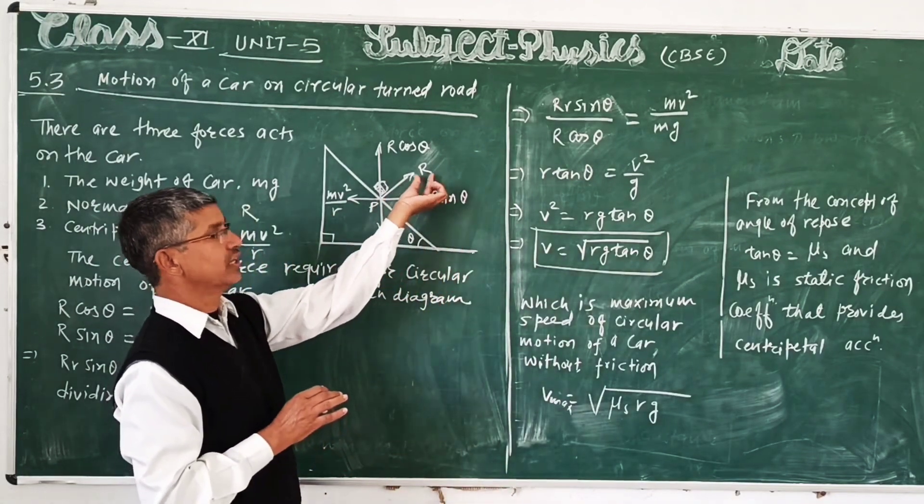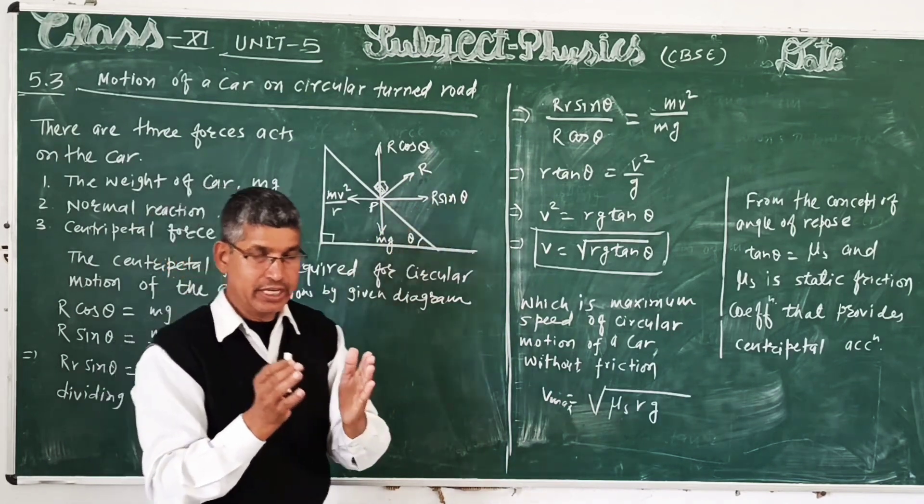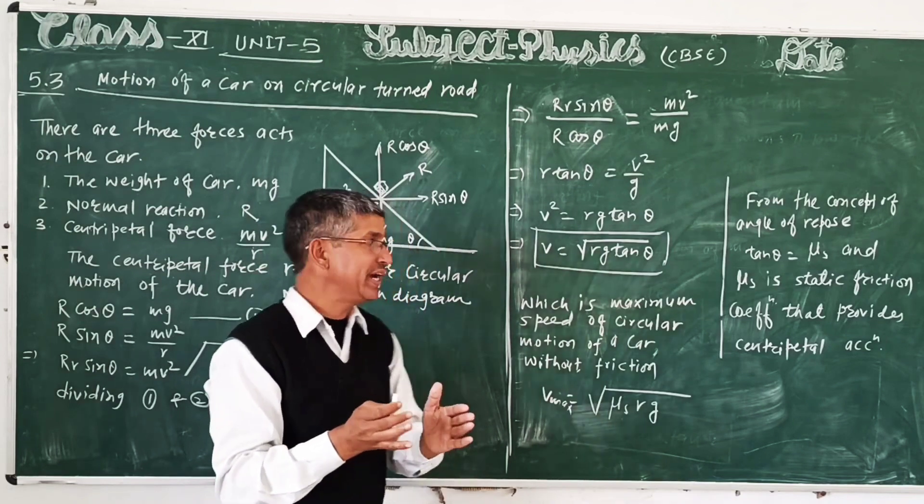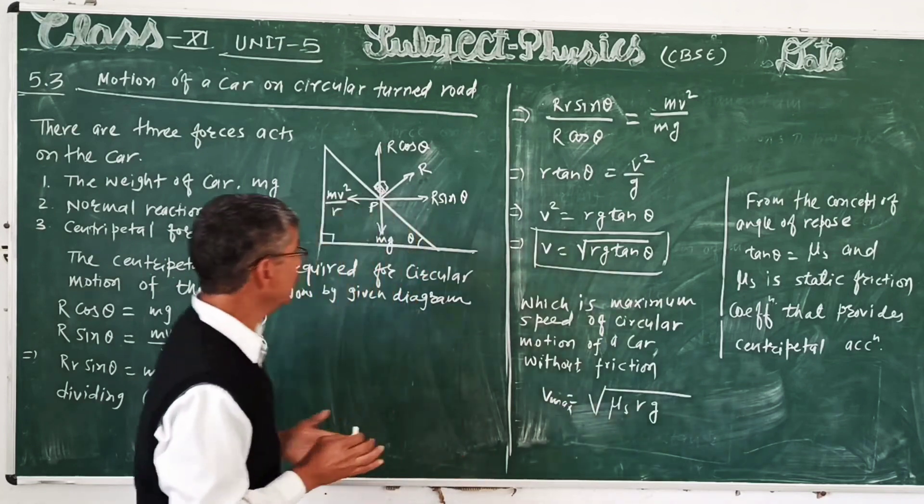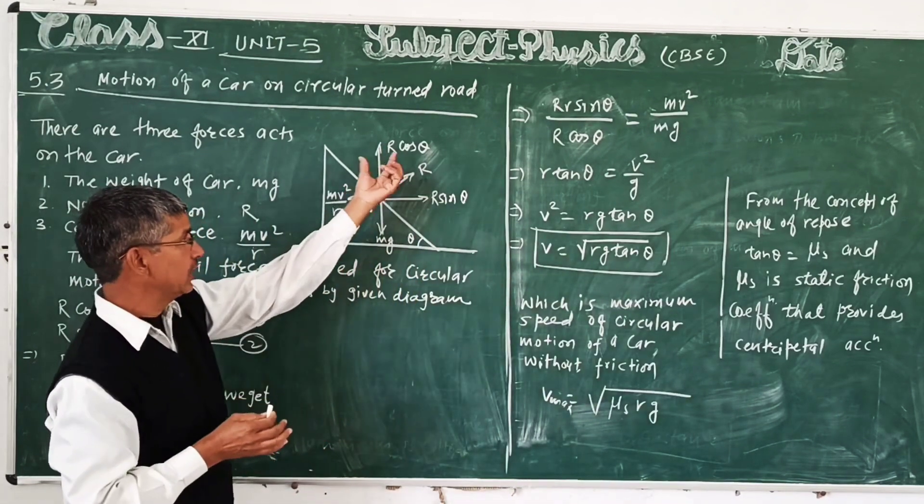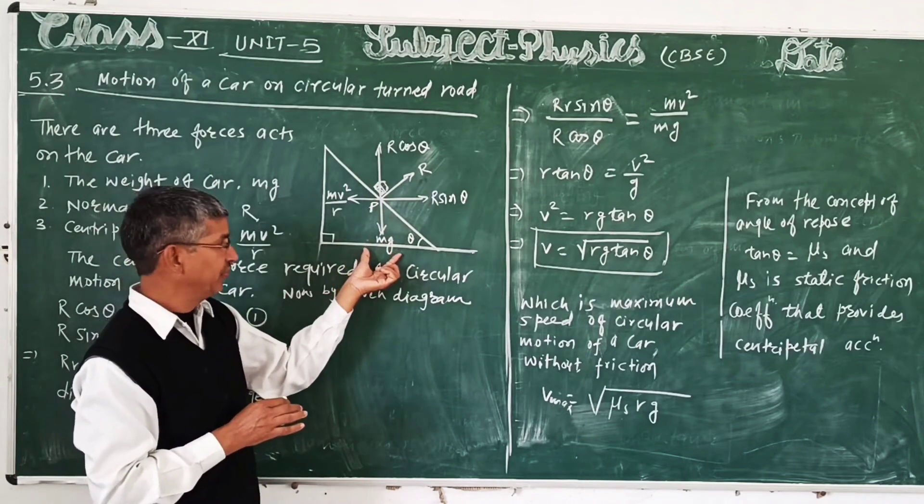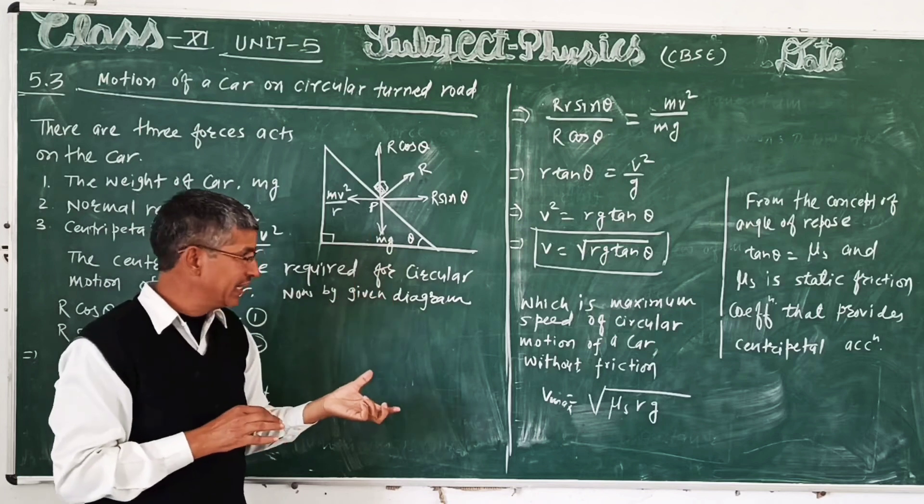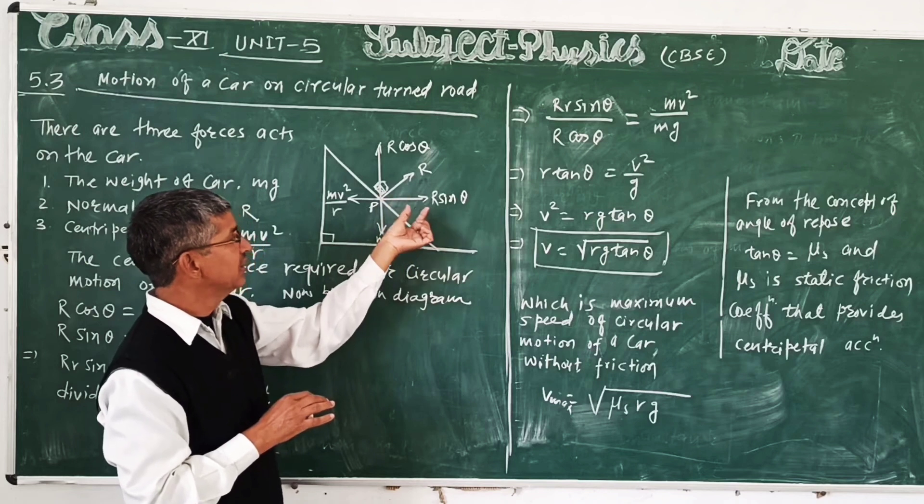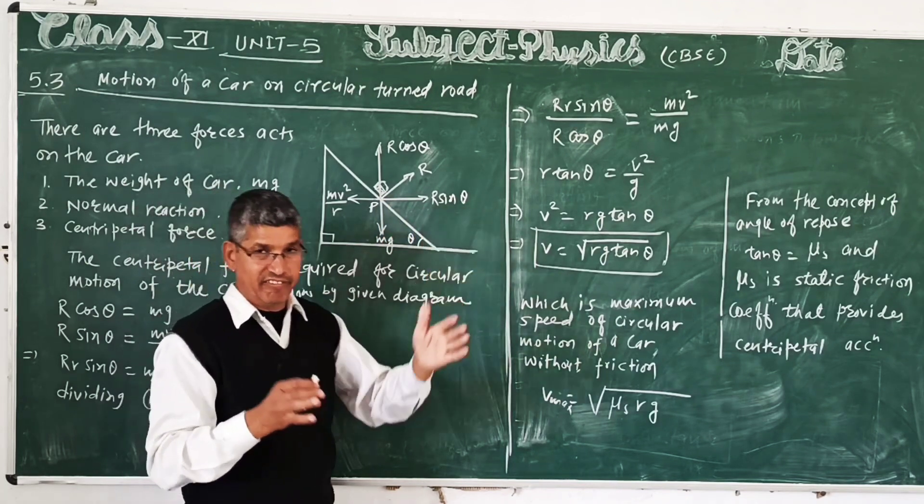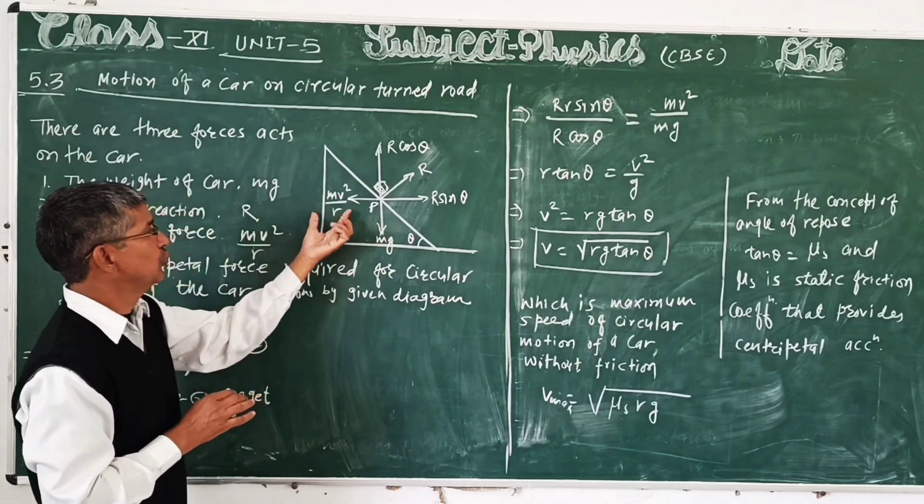R has horizontal component R sin theta and vertical component R cos theta. The vertical component R cos theta balances the weight of car mg acting downward, and the horizontal component R sin theta is balanced by centripetal force mv²/r.